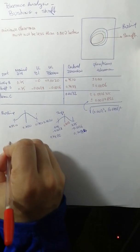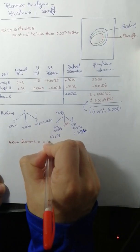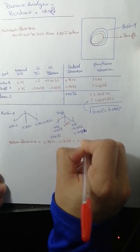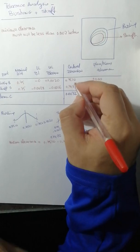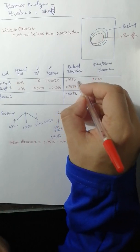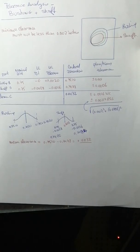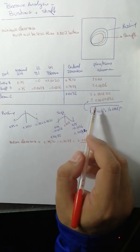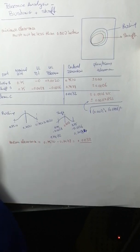The first step is to find the mean clearance, which is 0.7510 minus 0.7478 equals 0.0032. We subtract those two values. We have the worst case which is already calculated as 0.0016, and the root sum square as 0.00117.